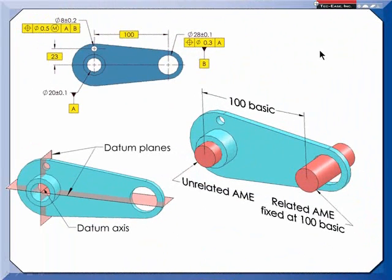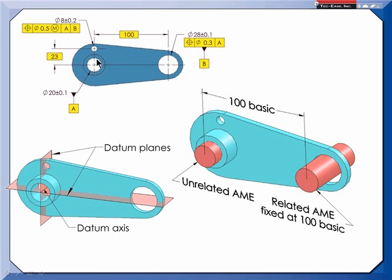Remember that the datum feature simulator's default condition is located at basic. On this part, A and B are regardless of material boundary. So to establish my primary datum I would have to fill datum feature A regardless of material boundary, and that would establish an axis.